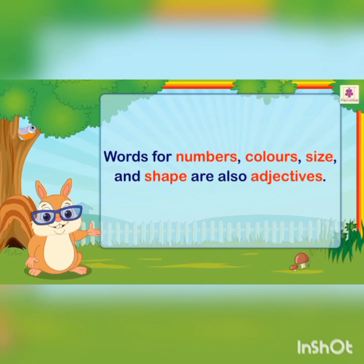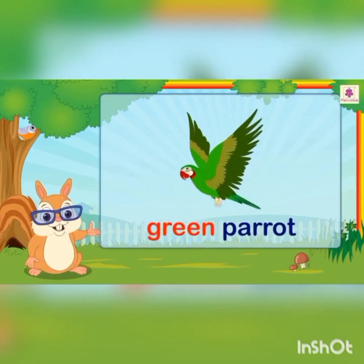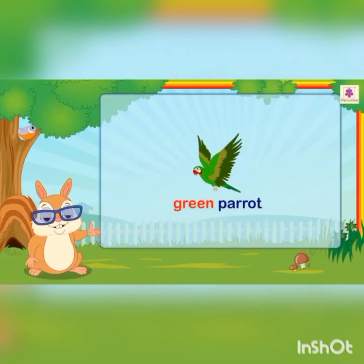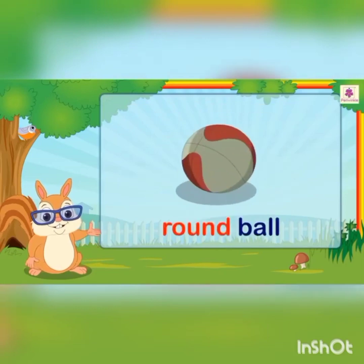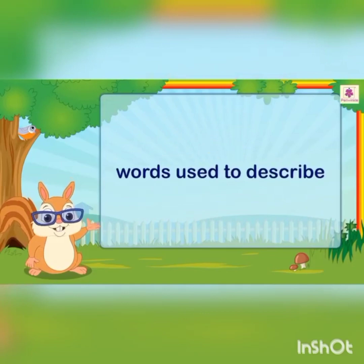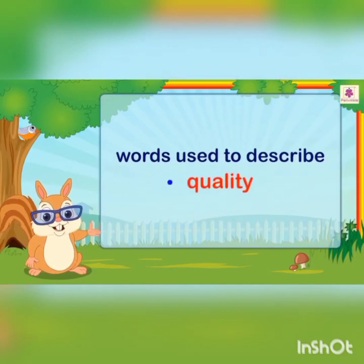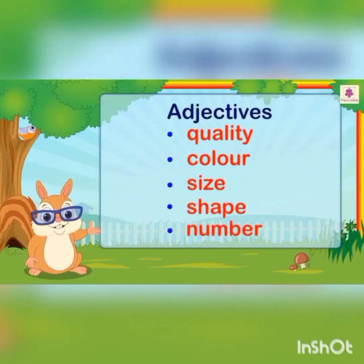For example: smart boy, green parrot, big hall, round ball, one hen and two chicks. So we see that words used to describe quality, color, size, shape and number are called adjectives.